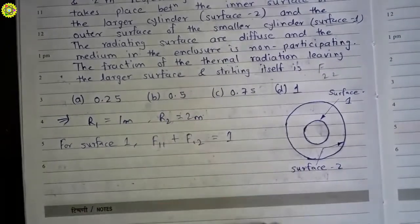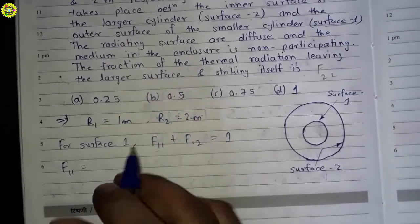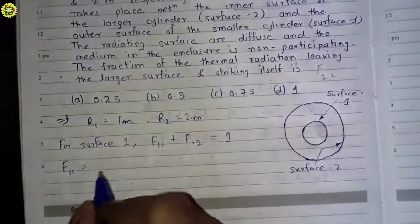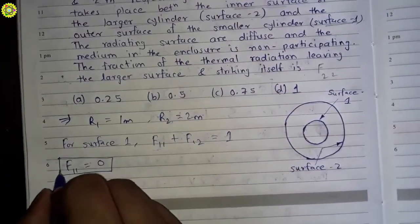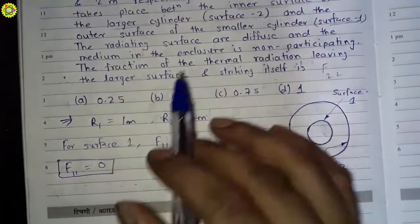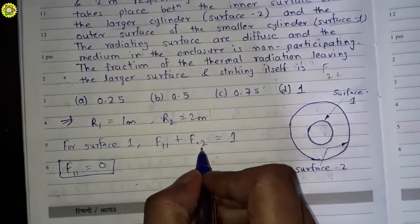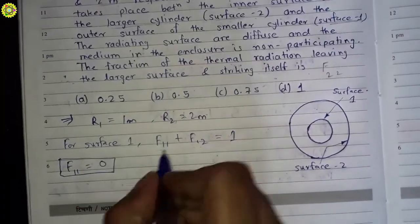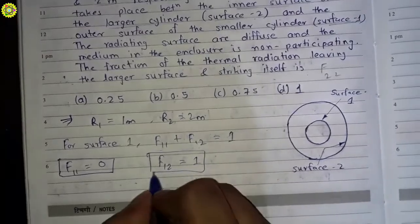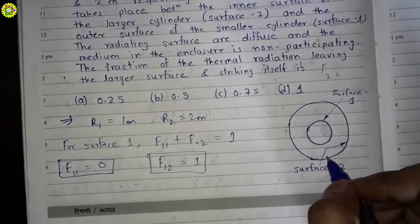For convex and flat surfaces, F₁₁ = 0, because a convex surface cannot see or view any other part of itself. Therefore, F₁₂ = 1 — the shape factor of surface 1 with respect to surface 2.